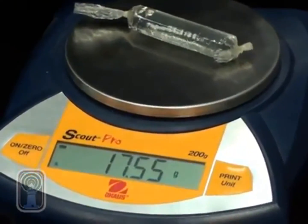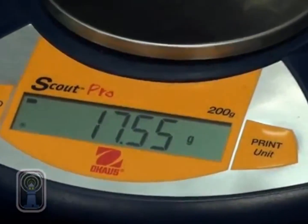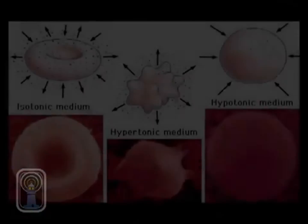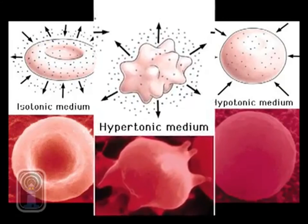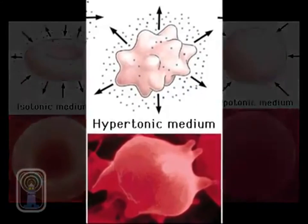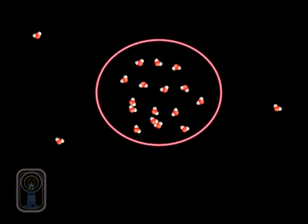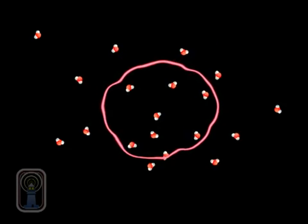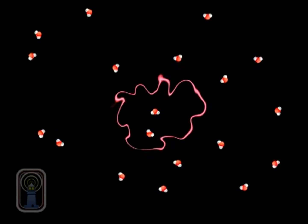As you can see, there was a significant gain in weight from the water molecules entering the cell. If a solution is hypertonic, there is a greater concentration of solute outside the cell than there is inside the cell. As a result, water leaves the cell and the cell shrinks.